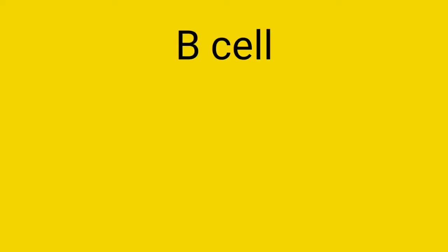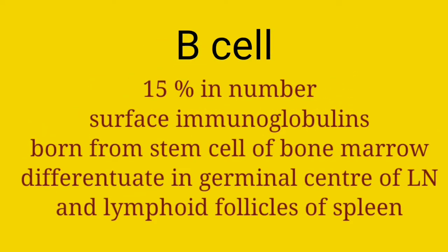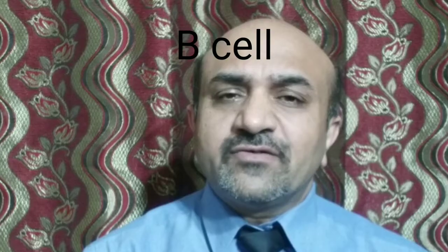Talking about the B-cells, these make up almost 15 percent of the circulatory lymphocytes and they have very characteristic immunoglobulins on their surfaces. The B-cells have their origins from the stem cells of the bone marrow, and they not only differentiate within the bone marrow but also in the periphery.